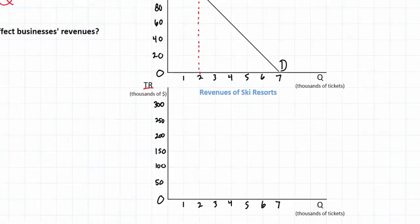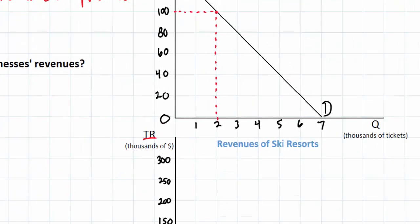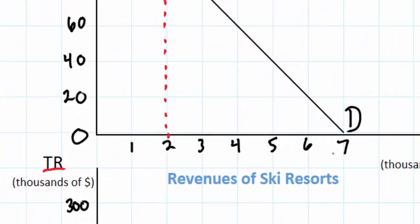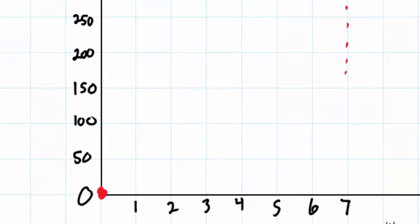There are a couple points we can add to this total revenue curve very quickly and easily. Notice that at a price of $140, zero lift tickets are demanded, so the price times quantity will turn out to be zero. There will be no revenues earned at a price of $140 per lift ticket. Likewise at a price of $0, 7,000 lift tickets will be demanded, so we can put a point down here on our demand curve and at this point there will be zero revenues earned because the price of 0 times 7,000 gives us a total revenue of 0.